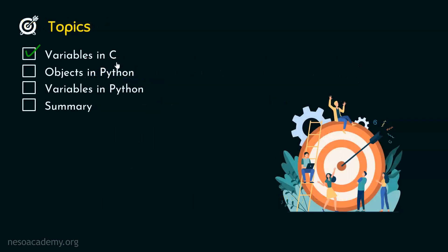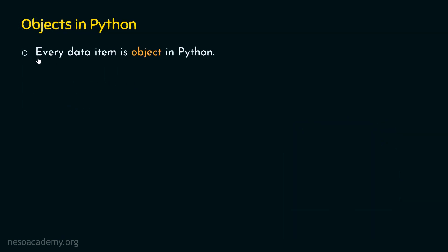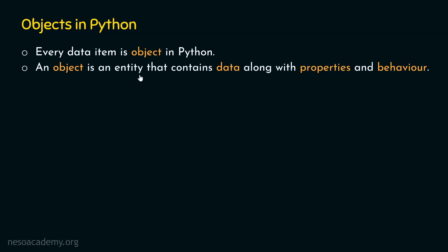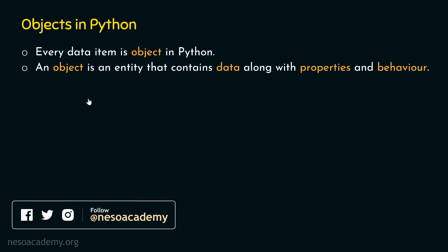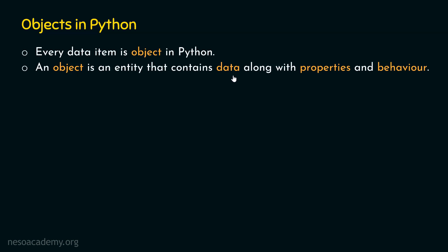Now we know what a variable in C looks like. Let's move on to objects in Python. Before understanding variables in Python in depth, we need to understand what objects are in Python. Every data item is an object in Python. Whatever data item you pick, it is no more than an object. An object is an entity that contains data along with properties and behavior. There is a subtle difference between an object and a value. A value is simply data — let's say value 10. But an object not only contains data, it also contains the properties and behavior of that data. You can think of it as a package which consists of data along with the properties and behavior of that data.